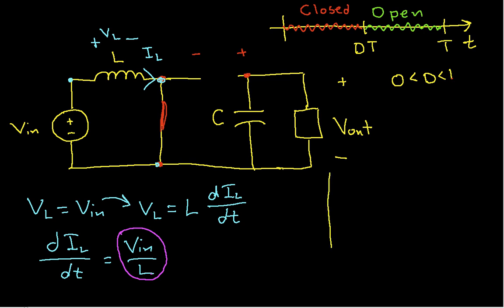So, if we graph the inductor current as a function of time, from the point where the switch closes to D times T, our inductor current is going to look like a straight line. And we'll redraw this in red to indicate that this is what happens during the time that the switch is closed.